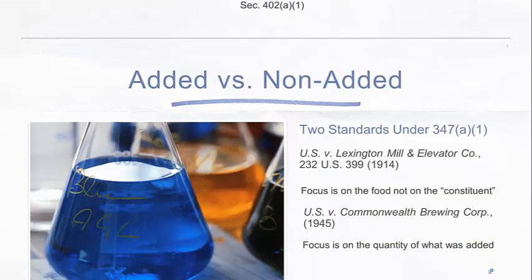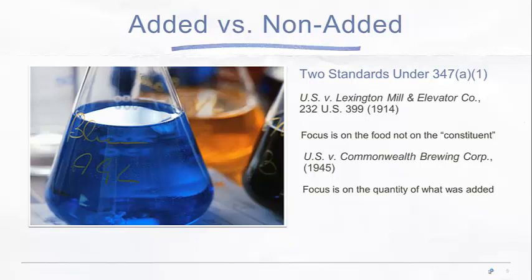We have these two standards, and you may have noticed in the readings I'm mixing in the old and updated section numbers. Section numbers in the statutes get shifted around when new laws or amendments come in. You can use either number and it will come up, as a lot of times you'll see the old citation number in parentheses alongside the new one. Under the current statute it's 347A1, covering both the May Render Injurious and the Ordinarily Injurious to health standards. The difference is added versus non-added.